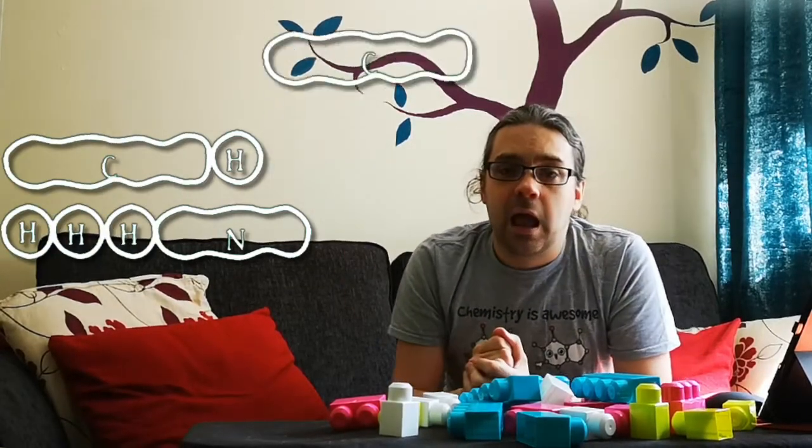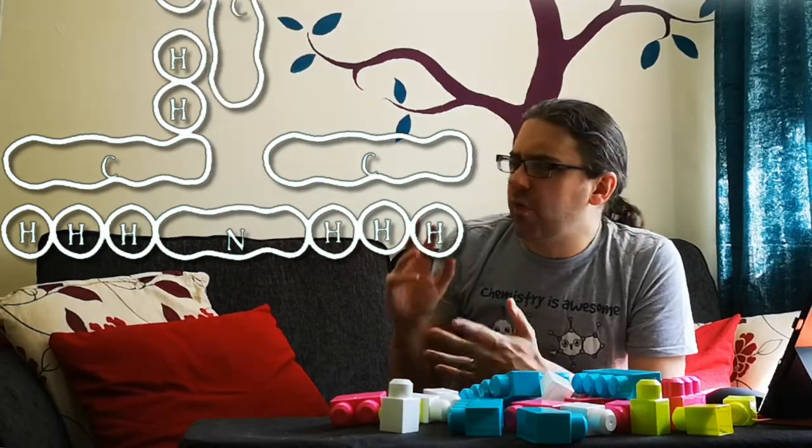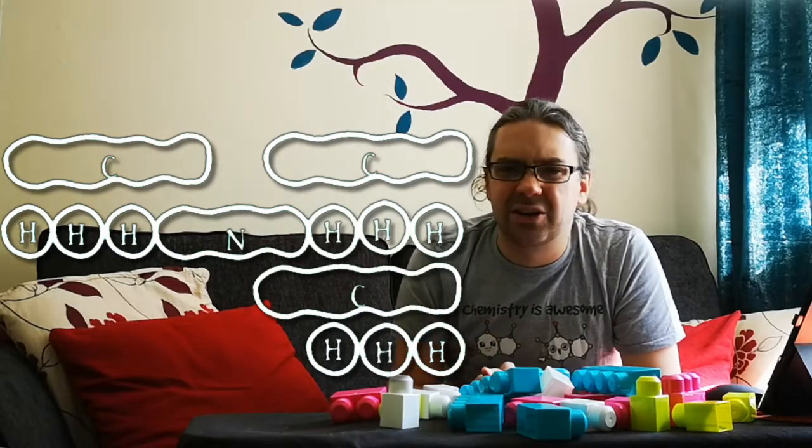We can then substitute one hydrogen for carbon to make a primary amine, or substitute another for a secondary amine. And then we're a little stuck if we want a tertiary amine. Do we stick it sideways? Can we cram an extra carbon in there in some other way? Either way, it's ugly and a little ambiguous when it comes to whether the valence has been satisfied.